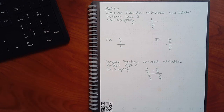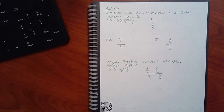Now, complex fractions — just by definition, not the formal definition — are a fraction within a fraction. That's what we're looking for. You're going to have to identify in the computer system where the long bar is, because the long bar is basically giving us the bigger fraction — the giant fraction. And then you might have many fractions within that numerator and that denominator of the big fraction. So that's what we've got to look for here.